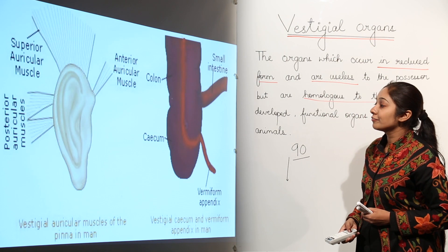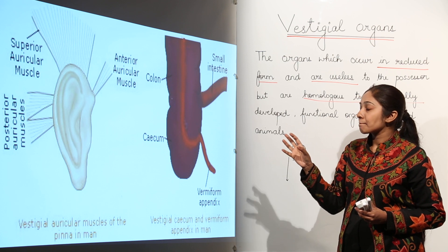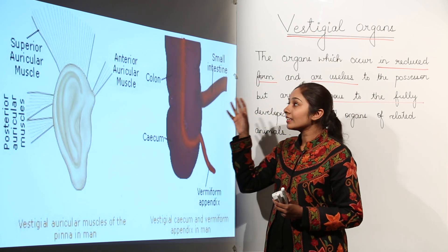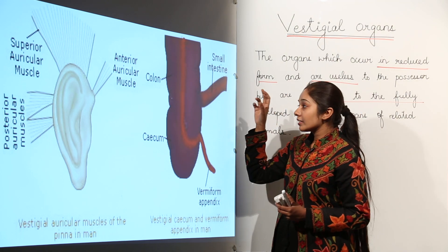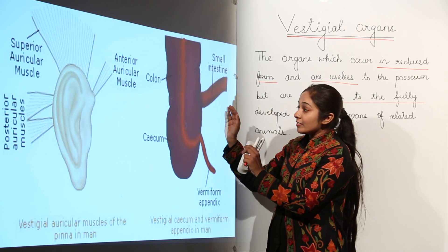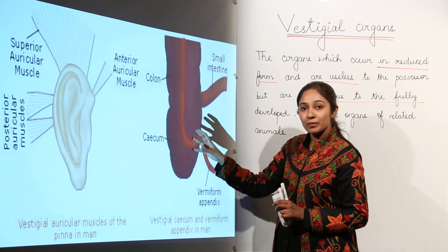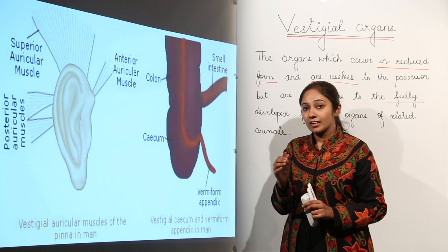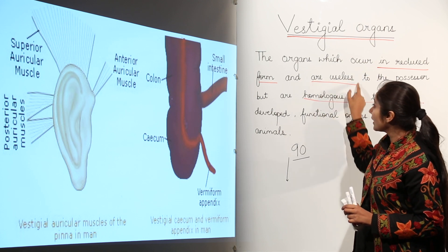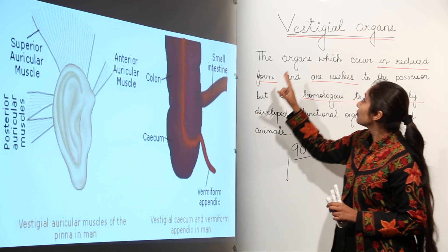In the human body, we also have auricular muscles. In dogs and cats, these muscles help animals respond to sounds — the pinna of the ear adjusts in the direction the sound is coming from, helping animals locate the sound source. But in human beings, these auricular muscles are reduced and have become useless. So auricular muscles of the ear are an example of a vestigial organ.